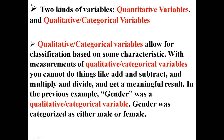Qualitative variables, or categorical variables, allow for classification based on some characteristic. With measurements of qualitative variables, you cannot do things like add and subtract or multiply and divide and get a meaningful result. For example, gender is a qualitative variable — being male or female. You cannot add or subtract from either of those and say male is two more than female, because it wouldn't make any sense.